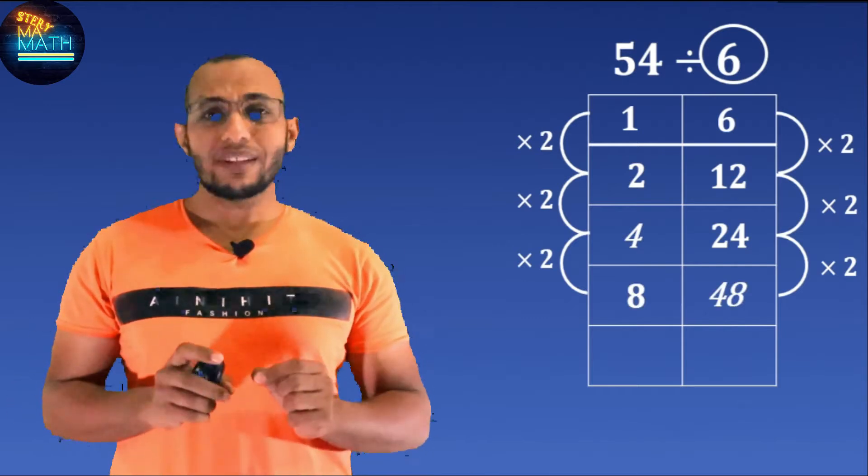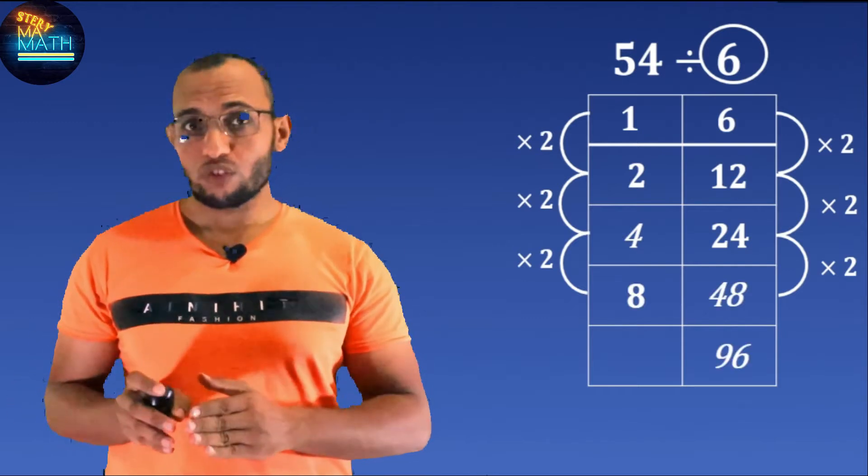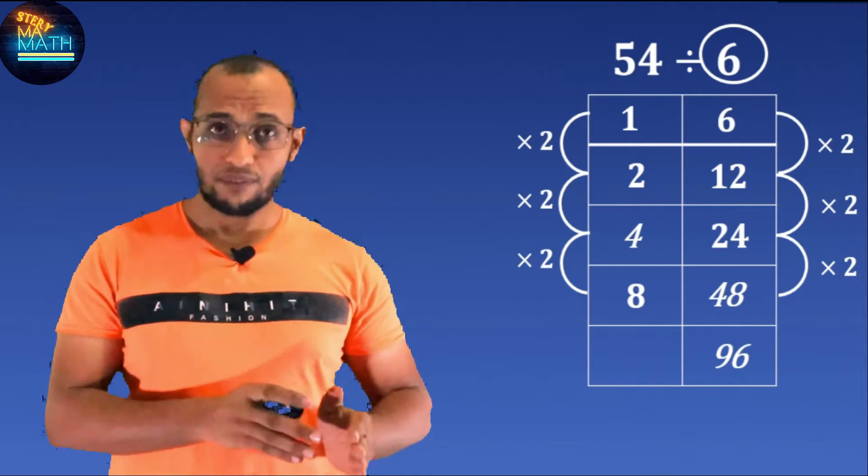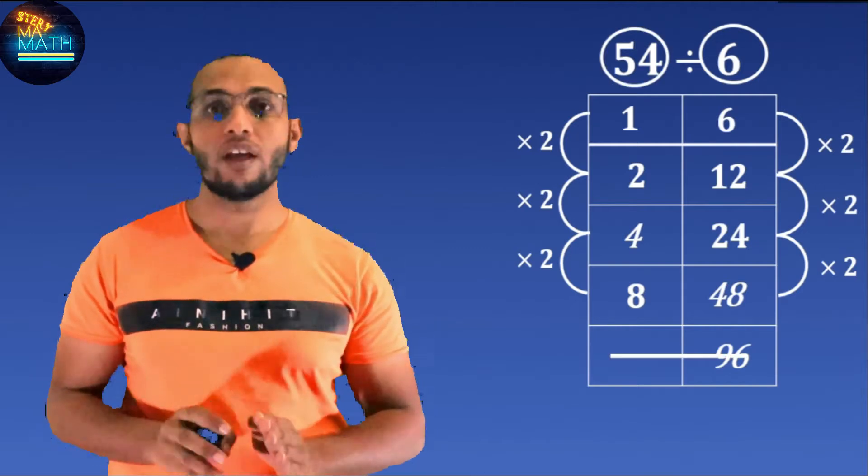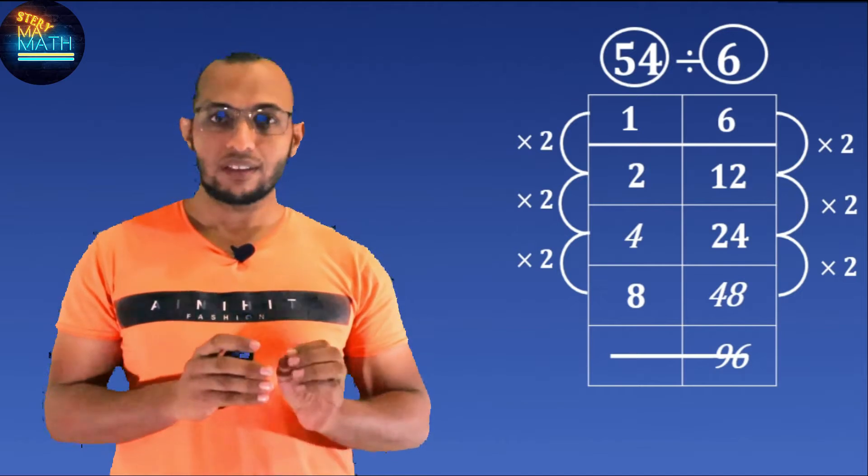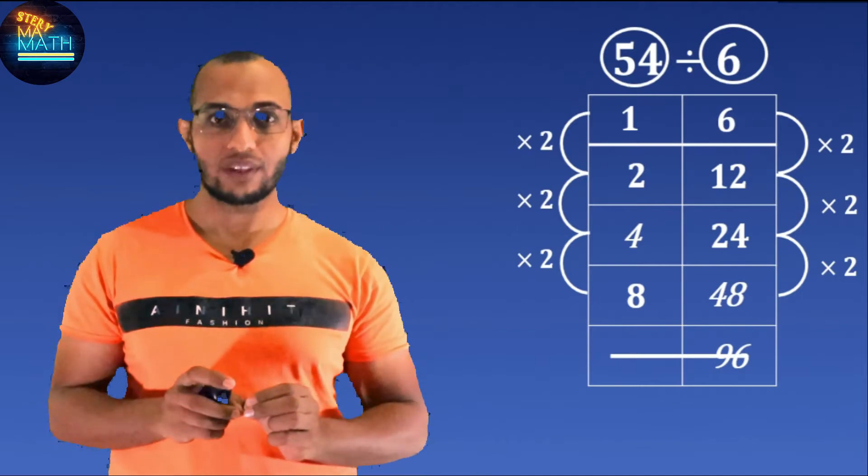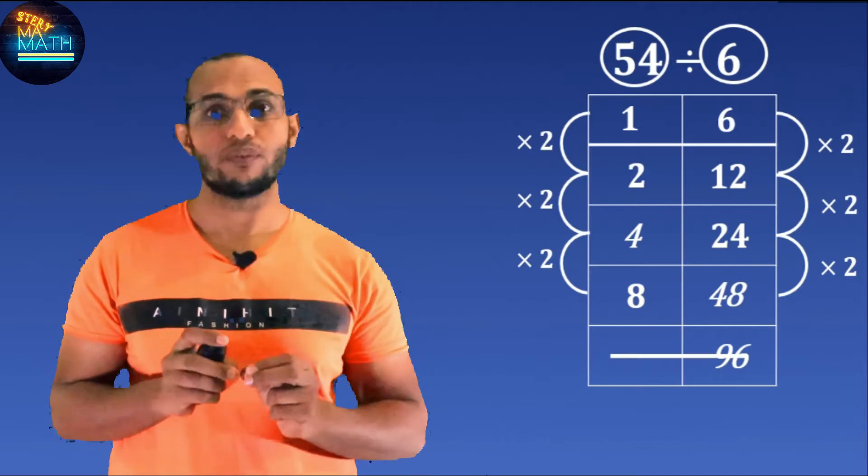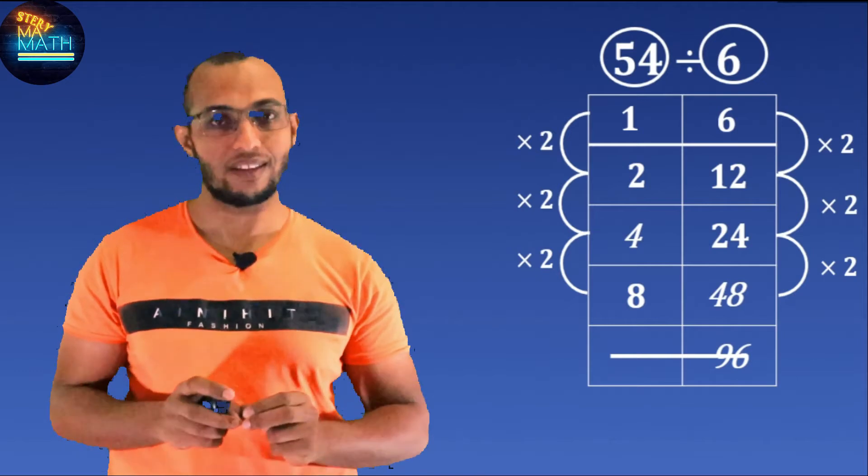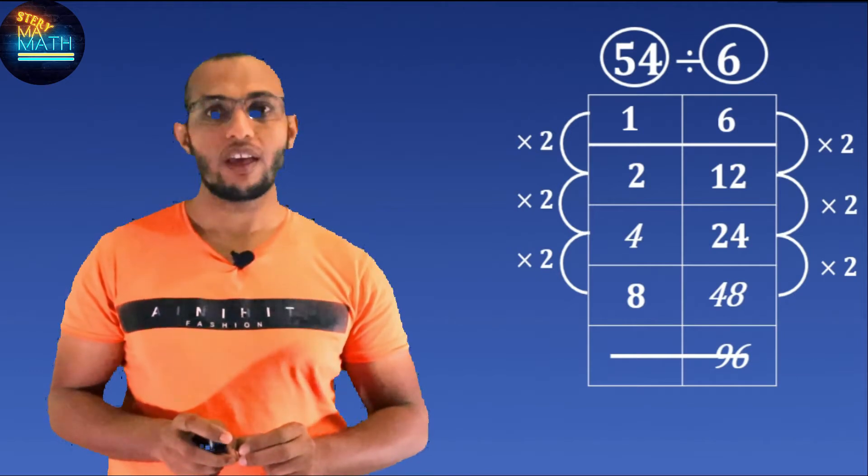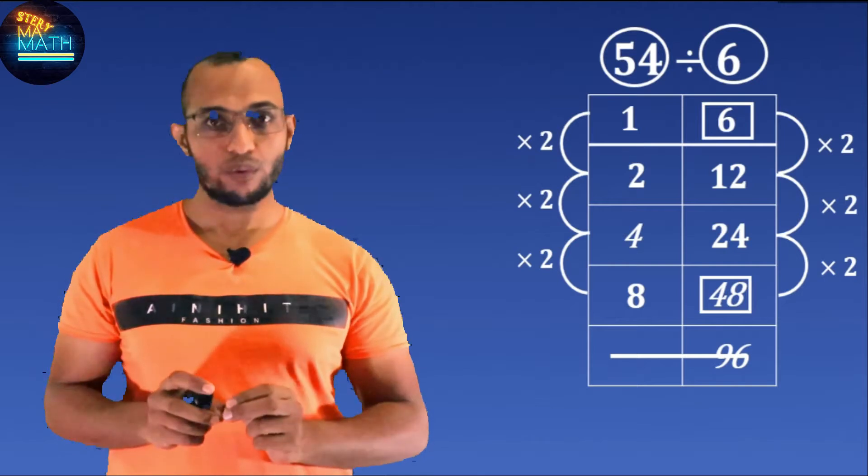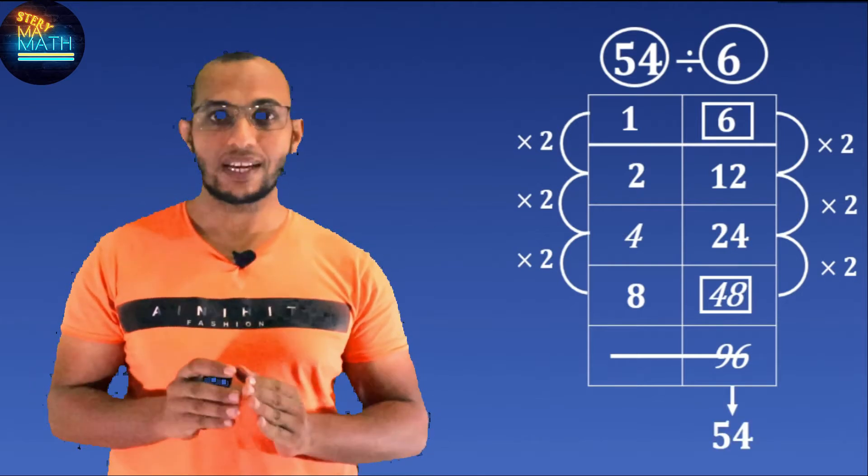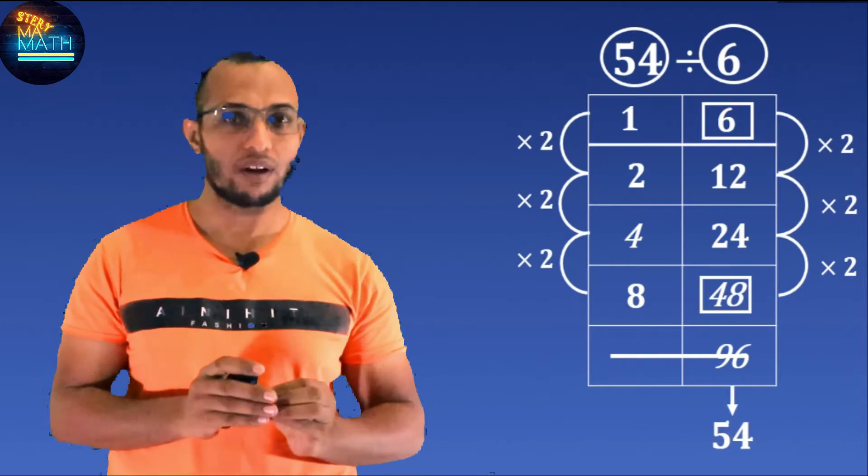Now if you double it again, you get 96, which is larger than the dividend 54, so stop at the point. Look at the right-hand column and try to figure out the numbers added up to 54, which is the dividend. You see that 6 plus 48 is equal to 54.